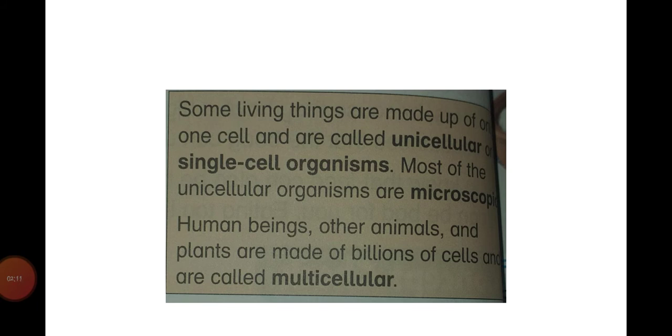Microorganisms are basically single cell organisms. It means they are made up of only one cell, that's why they are called unicellular organisms or single cellular organisms. The unicellular organisms are microscopic because we cannot see them. Human beings and other animals such as plants are made up of billions of cells and these are called multicellular. It means they have many many cells, billions of cells.